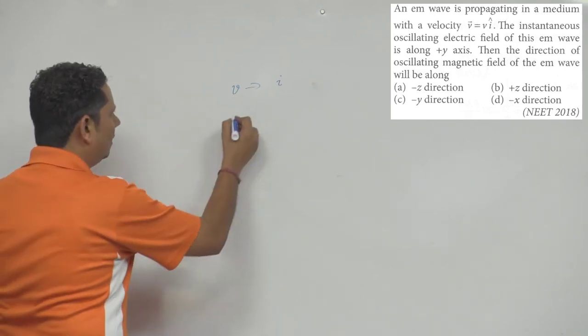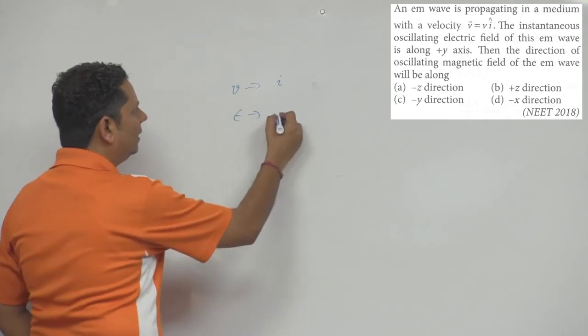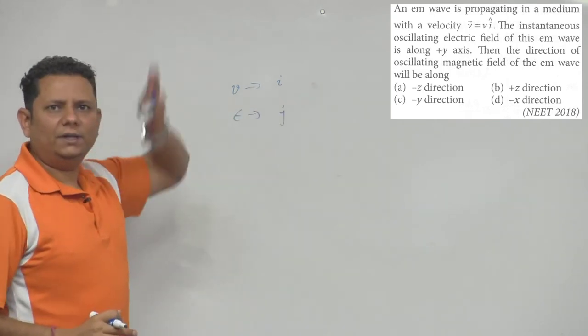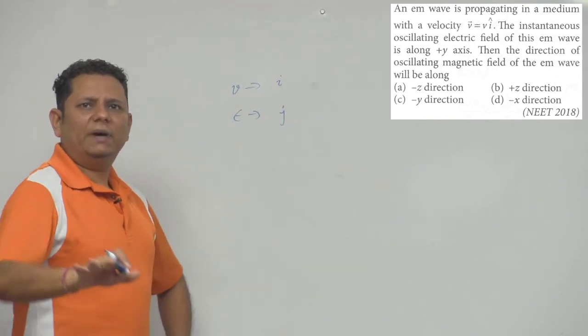Your electric field, the direction that's given to you, is j cap, which will be in this direction.